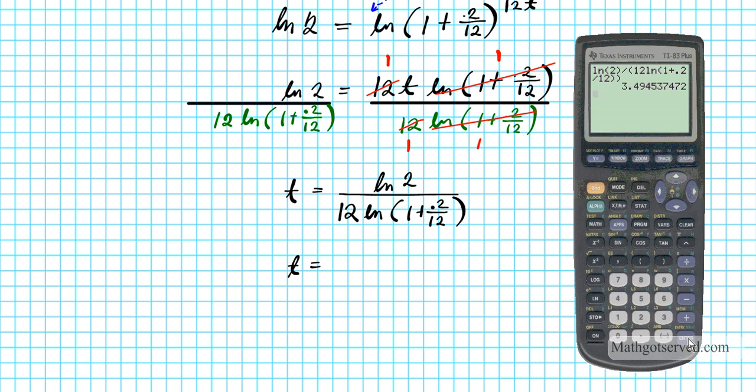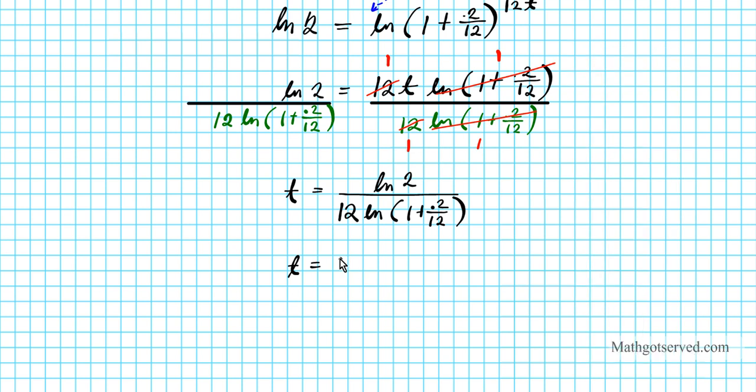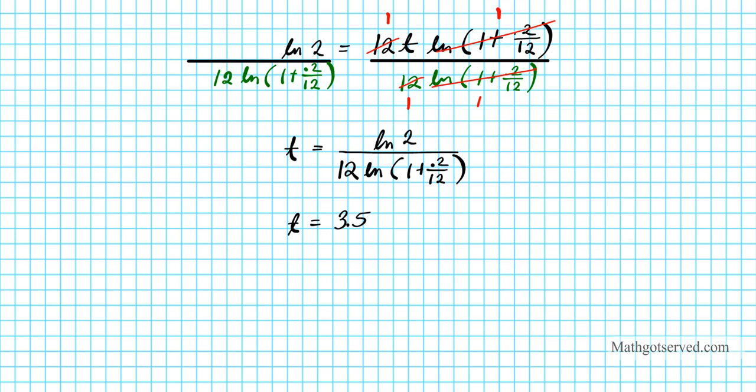Let's round it to 3.5. So t is basically 3.5. So what does this answer mean? Well, it means that it will take Alberto three and a half years or 3.5 years to double his money.